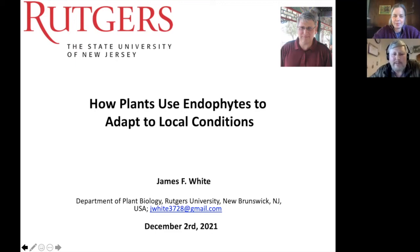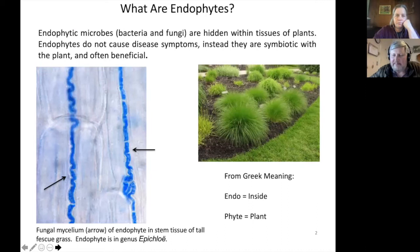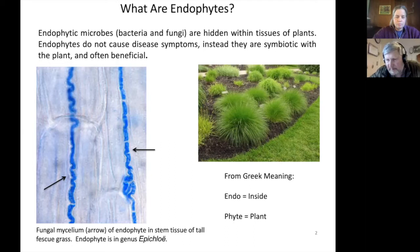What I'm going to talk about is how plants use endophytic microbes, both fungi and bacteria, in order to adapt themselves to their environment or local conditions. An endophyte is a microbe — typically either a bacterium or a fungus — that goes into the plant and does not cause disease. Endo means inside, phyte means plant; endophytes actually go inside the plant cells.